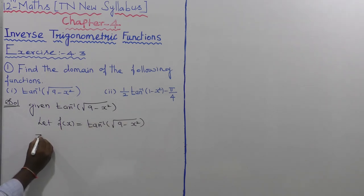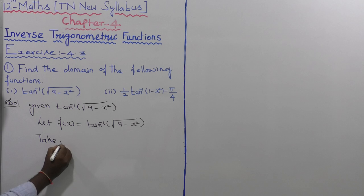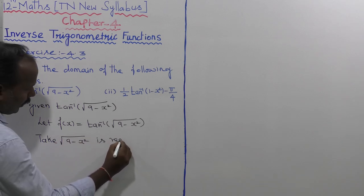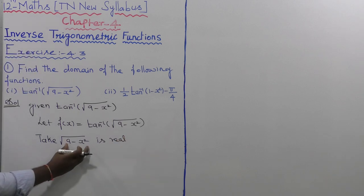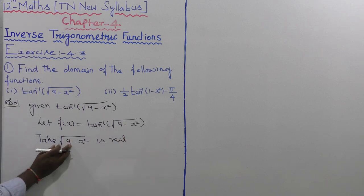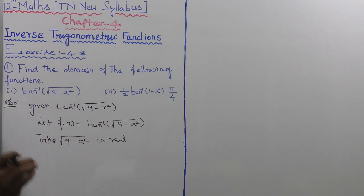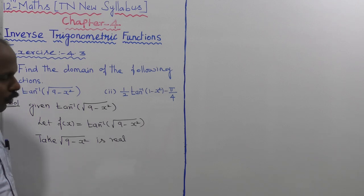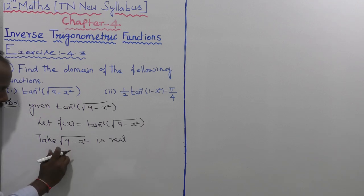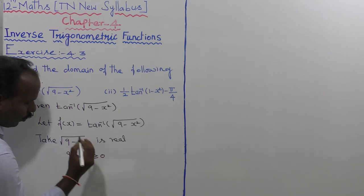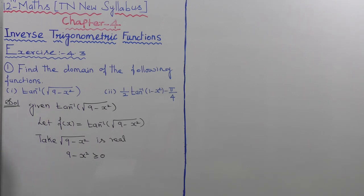Let us take root of 9 minus x squared as a real number — that is called a real value. Now, root of 9 minus x squared is definitely a positive value, because the square root does not exist for negative values. So, 9 minus x squared must be greater than or equal to 0.